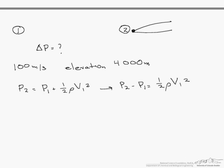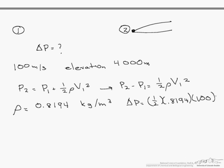We know that our V is 100 meters per second. We can look up the density of air at a temperature of about minus 11 degrees C, which is 0.8194 kilograms per meter cubed. So our delta P is one half times 0.8194 times 100 meters per second squared.